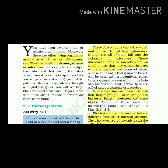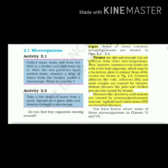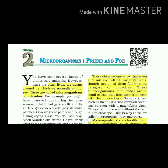Let's read out some activity. Collect some moist soil from the field in a beaker and add water to it. After the soil particles have settled down, observe a drop of water from the beaker under a microscope. Take a few drops of water from a pond, spread on a glass slide and observe through a microscope. Do you find tiny organisms moving around? These observations show that water and soil are full of tiny microorganisms.